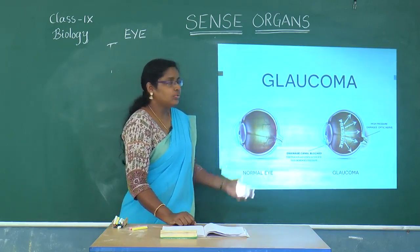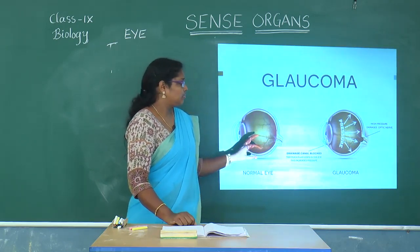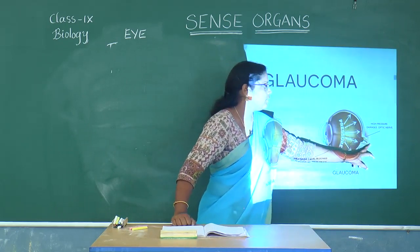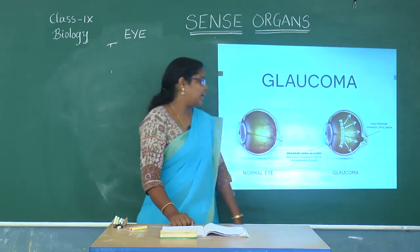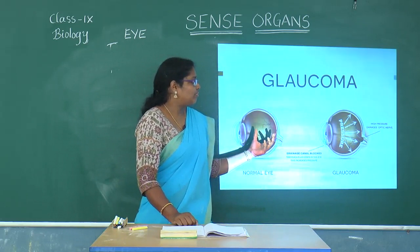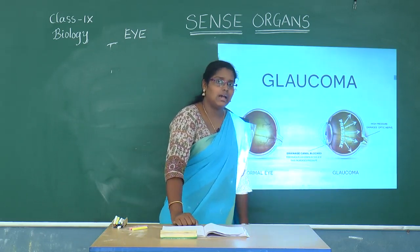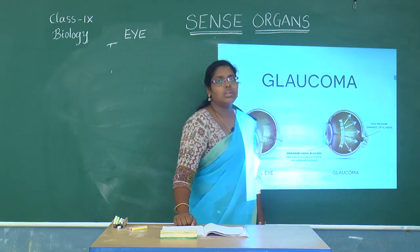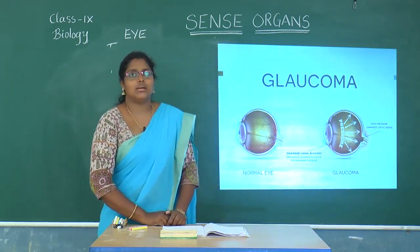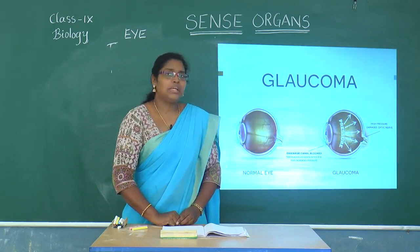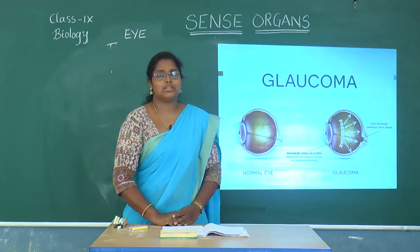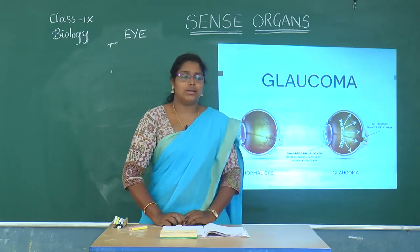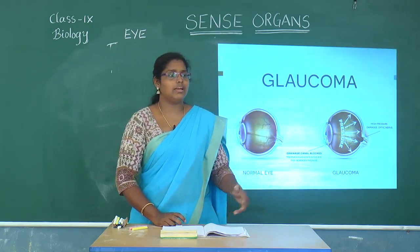The next disease is glaucoma. In this condition, excess fluid accumulates inside the eye, increasing the pressure inside the eye. This increased pressure affects the optic nerve. The optic nerve can no longer carry impulses to the brain, which may lead to blindness.